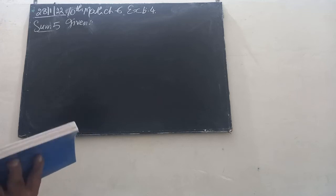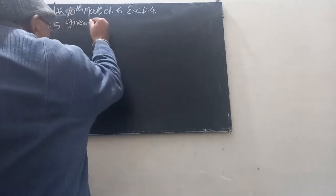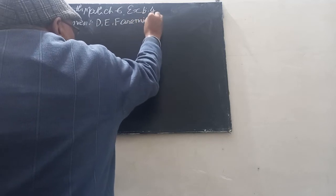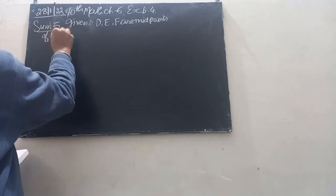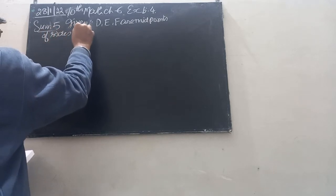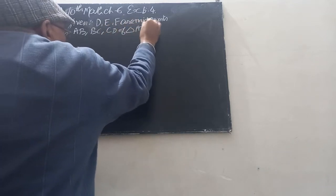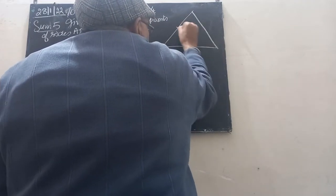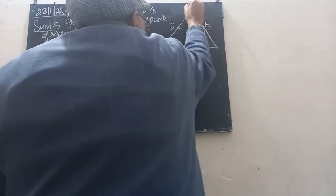Suppose D, E, F are the midpoints of sides AB, BC, and CA respectively of triangle ABC. D, E, F are midpoints of the sides of triangle ABC.